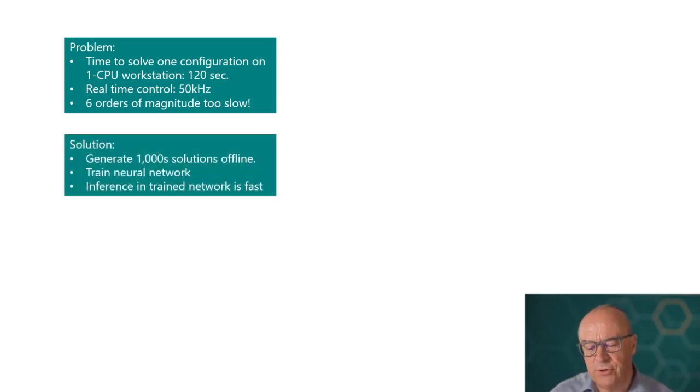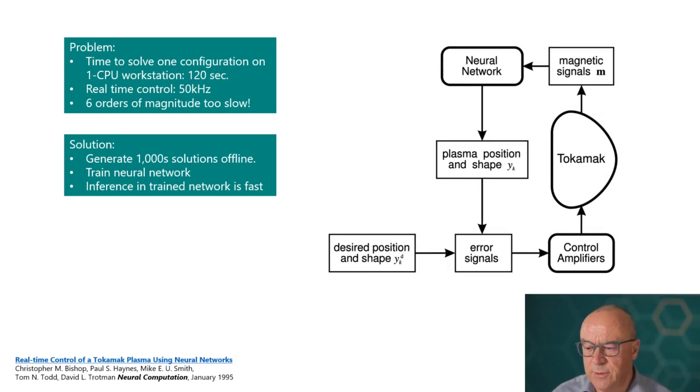So the idea here is to generate thousands of solutions offline and then to train up a neural network. And then the trained neural network can be very fast at inference time. And so we have this kind of feedback control system. We have magnetic measurements of these little coils close to the edge of the plasma. Those are the inputs to the trained neural network. At the output will be a set of real time values for position and shape parameters of the plasma. Those are compared with desired values. That difference produces an error signal that's sent to control amplifiers to change the current through those big coils that can manipulate the plasma. And by the way, I'm sure many of you will be familiar with an excellent paper recently produced by DeepMind using reinforcement learning to control tokamak plasmas of this kind.